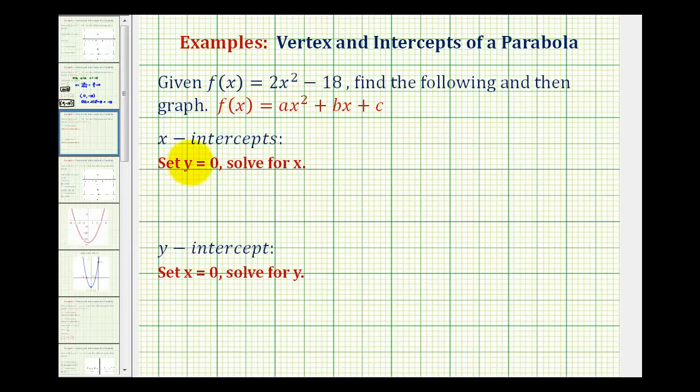Next, we want to find the x-intercepts. Remember, all points on the x-axis have a y-coordinate of 0. To find the x-intercepts, we set y equal to 0 and solve for x. The function values are y-values, so we want to solve the equation 0 equals 2x squared minus 18.